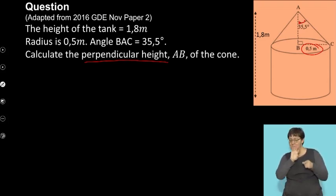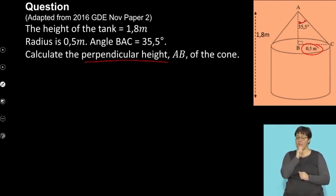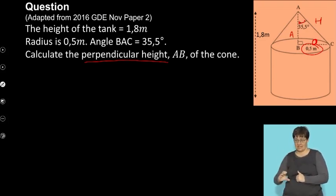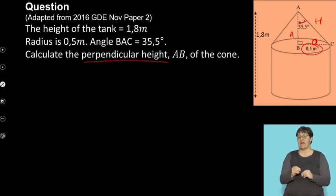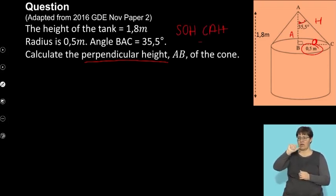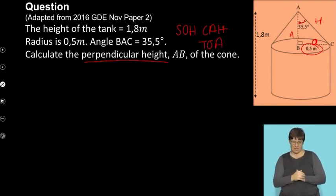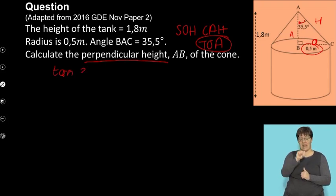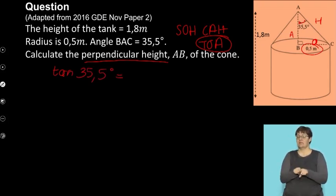I can use trig ratios to find missing sides. When using trig ratios I have to label my sides relative to the angle given. The opposite side is 0.5, the adjacent side is AB, and my hypotenuse is AC. I want to find AB, so I need the adjacent and I have the opposite. The trig ratio involving the opposite and adjacent is tan, so tan 35.5 degrees equals 0.5 over AB.